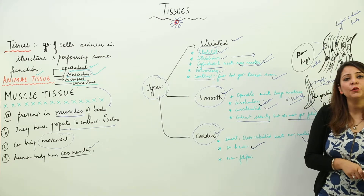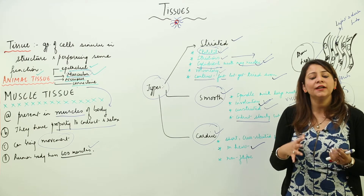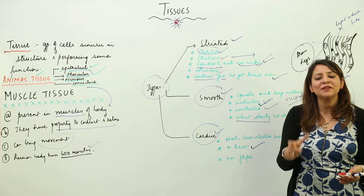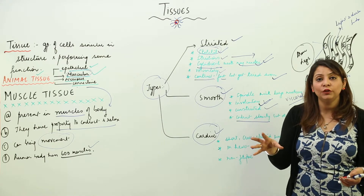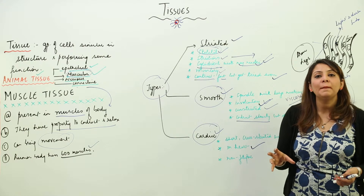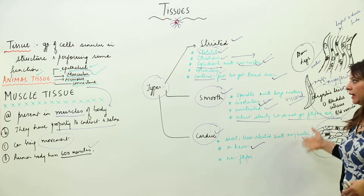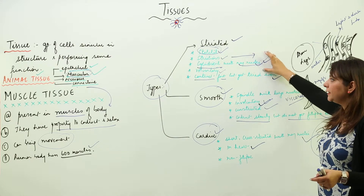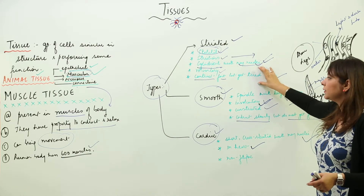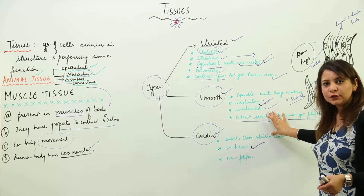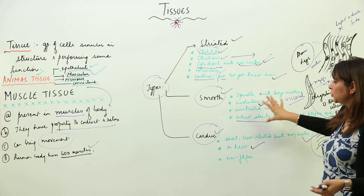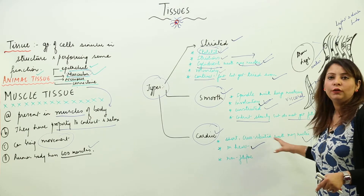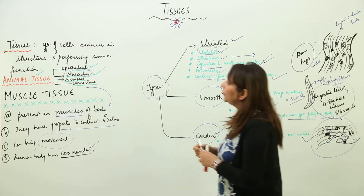Cardiac muscle looks like an irregular network of membranes with many nuclei. Like smooth muscle, it is involuntary. It has a special property: it is a non-fatigue muscle — it can contract and relax throughout life without becoming fatigued. The day it becomes fatigued, we die, because it is responsible for the contraction and relaxation of the heart, which pumps blood to all body parts.